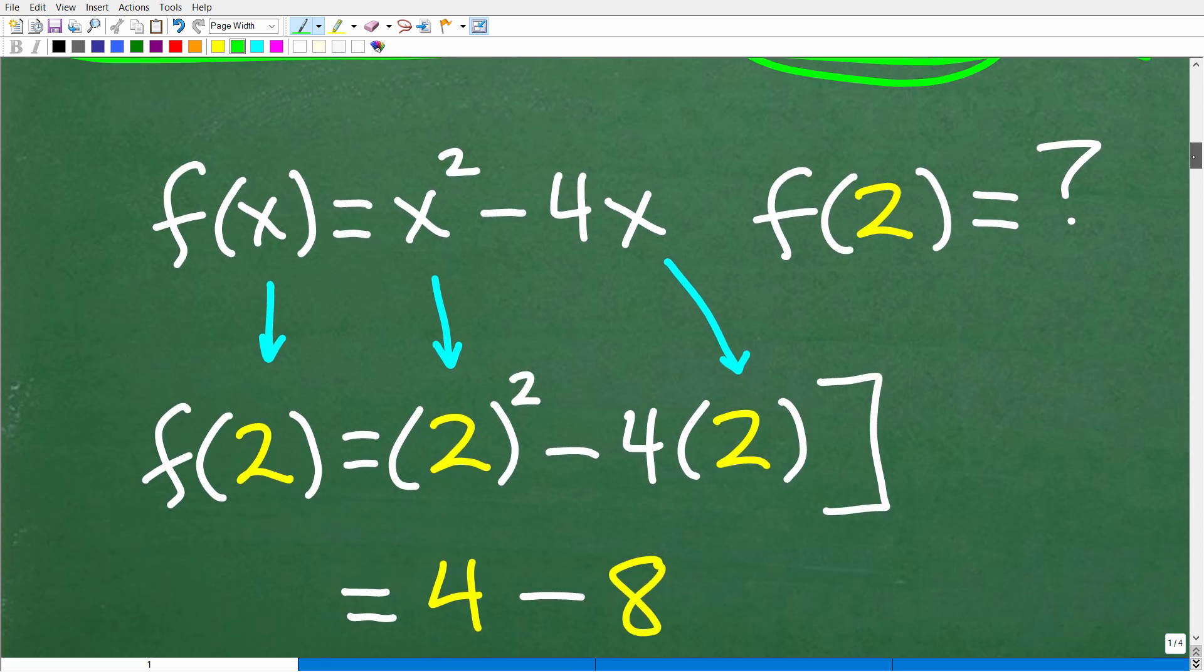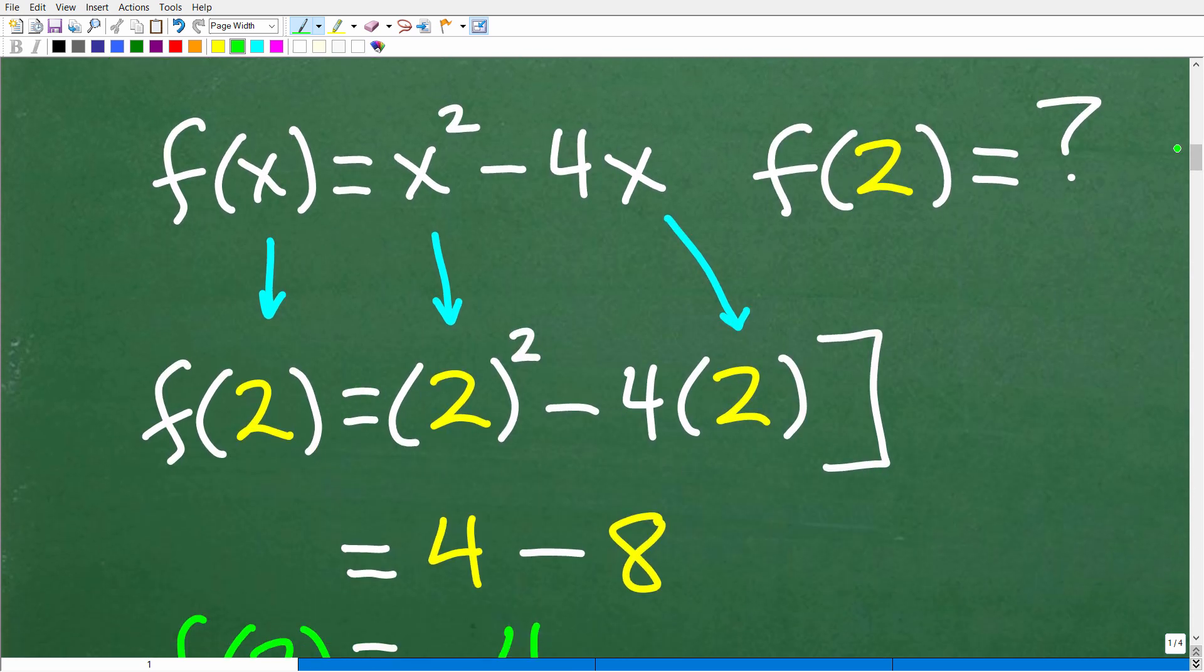Well, actually, this is a pretty simple concept. So we're trying to find f(2). So if we look here in our function, we have an x right here. And, of course, we don't have an x right here. We have a 2. But notice this variable x, it's the same variable right here in this expression. So f(x) = x² - 4x, or f of some number is going to be equal to that number squared minus 4 times that number.